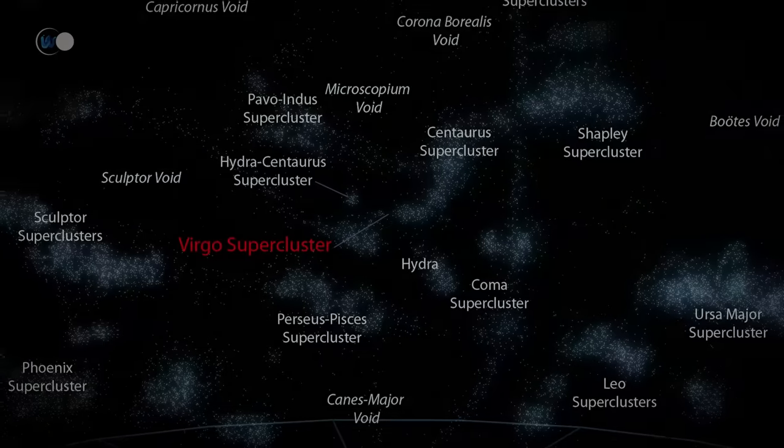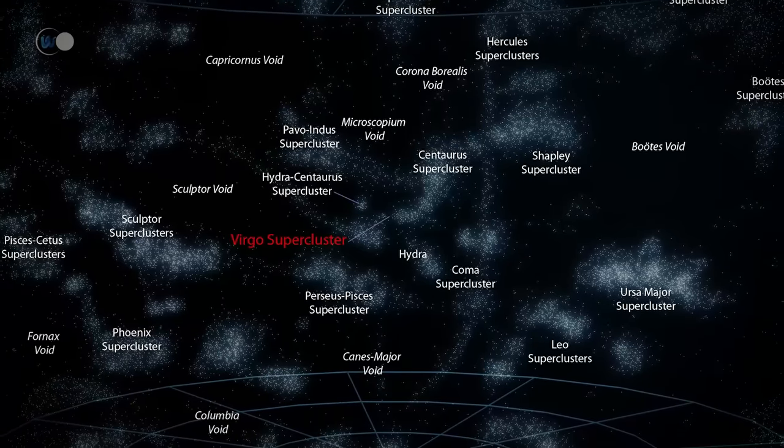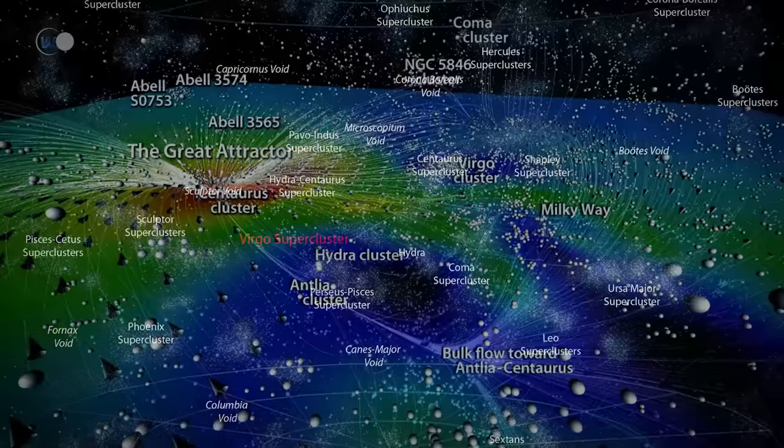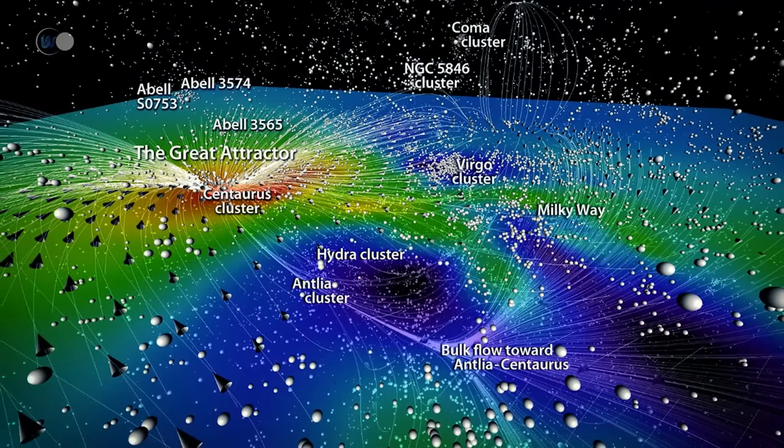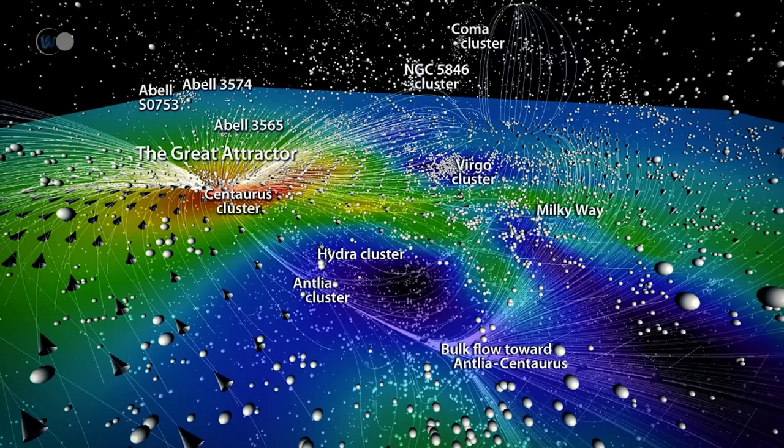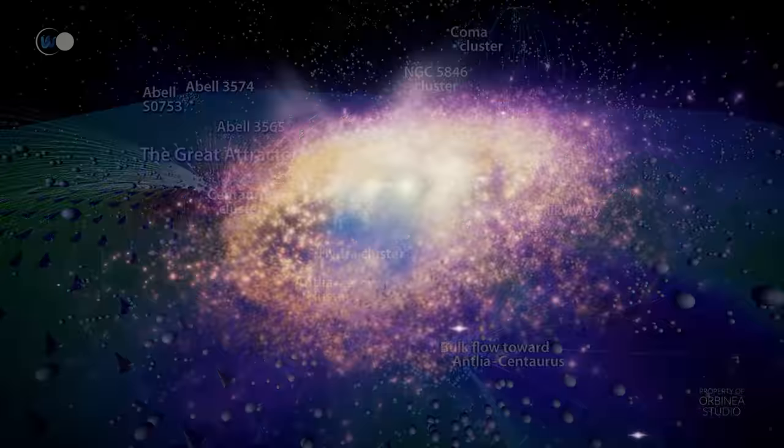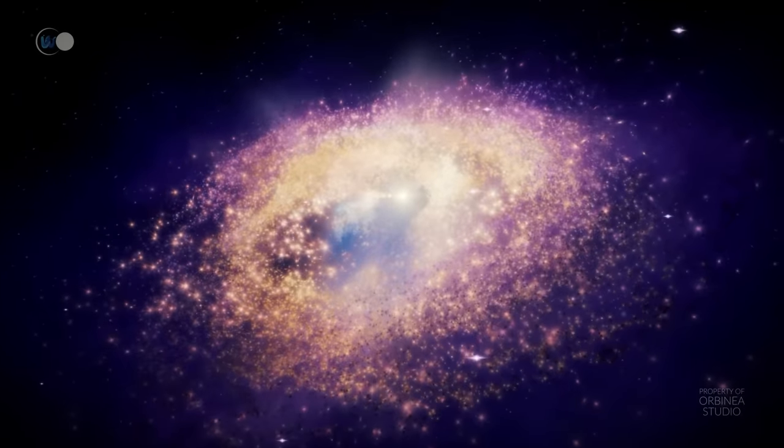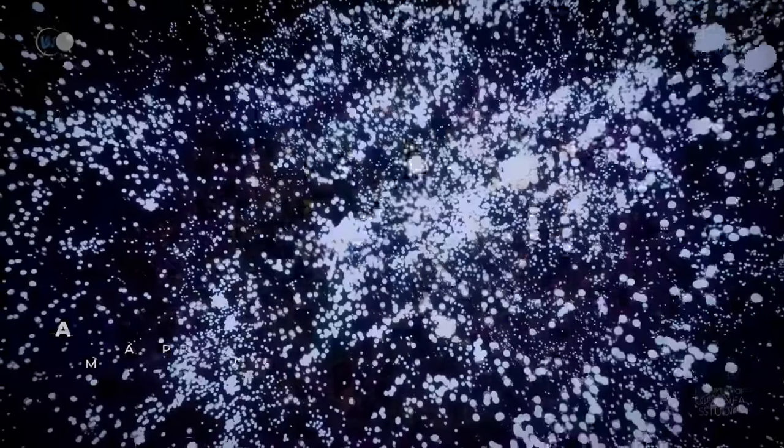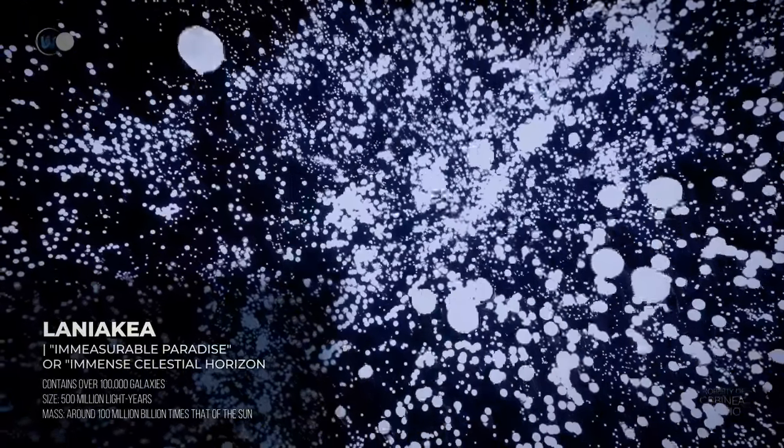Laniakea consists of three superclusters: the Virgo supercluster, of which we are a part, the Hydra-Centaur supercluster, in which the Great Attractor is located, and finally, the Peacock-Indian supercluster. As in most galactic clusters, the space between the different galaxies is not really empty. It is filled with rarefied gas, mainly hydrogen and helium, at a temperature of nearly 30 million degrees Celsius, or 54 million degrees Fahrenheit.